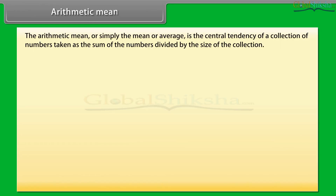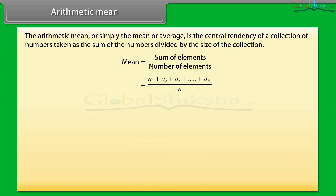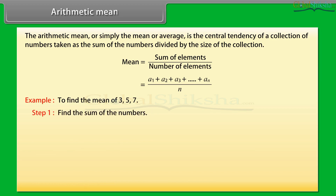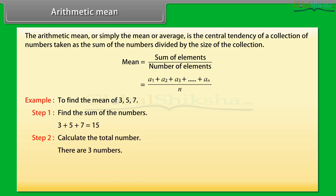Arithmetic Mean: The arithmetic mean, or simply the mean or average, is the central tendency of a collection of numbers, taken as the sum of the numbers divided by the size of the collection. Mean = Sum of elements / Number of elements = (A1 + A2 + A3 + ... + An) / n. Example: Find the mean of 3, 5, and 7. Step 1: Find the sum — 3 + 5 + 7 = 15. Step 2: Count the numbers — there are 3 numbers.